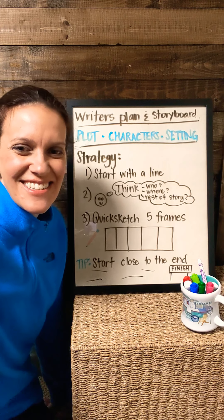So again, here are our steps. One: start with a line. Two: think about the rest of the story. Three: quick sketch — at least five frames, but you really don't want many more than that. So that's your work today. My challenge to you is to go ahead and get started on it. You can go to the next slide in this slideshow and you will see some different ideas you can use for a line to begin your story with. Then go through the rest of the steps so that you have your quick sketch storyboard ready to go for tomorrow when you get to draft. Look forward to seeing your stories. Have a good one. Bye.